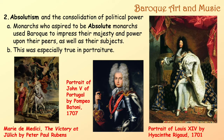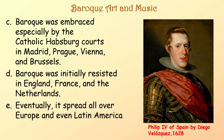Baroque was embraced especially by the Catholic Habsburg courts in Madrid, Prague, Vienna, and Brussels — the Habsburgs were all over the place. Baroque was initially resisted in England, France, and the Netherlands, although it started to really catch on in the Netherlands. Eventually it spread all over Europe and even to Latin America.